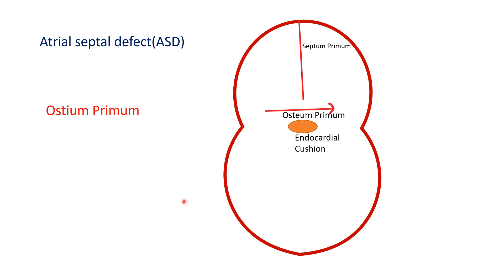To understand atrial septal defects, we must know a bit of embryology of septum development. This is the ostium primum, the gap between the two atria. This is the developing right atria and this is the developing left atria. This is septum primum — the wall between the two atria. Primum means first, so this is the first wall. This septum primum should fuse with the endocardial cushion, but initially it has an opening called ostium primum. Ostium means opening, primum means first — this is the first opening in septum primum.